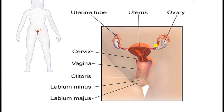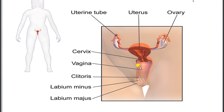The female reproductive system consists of a pair of ovaries, a pair of fallopian tubules or oviducts, and a single uterus. The uterus is an inverted pear-shaped structure. The neck-like structure of the uterus is known as the cervix, which opens into a broad structure known as the vagina. Cervix and vagina together form the birth canal. The external parts are known as external genitalia, which consists of the vulva.